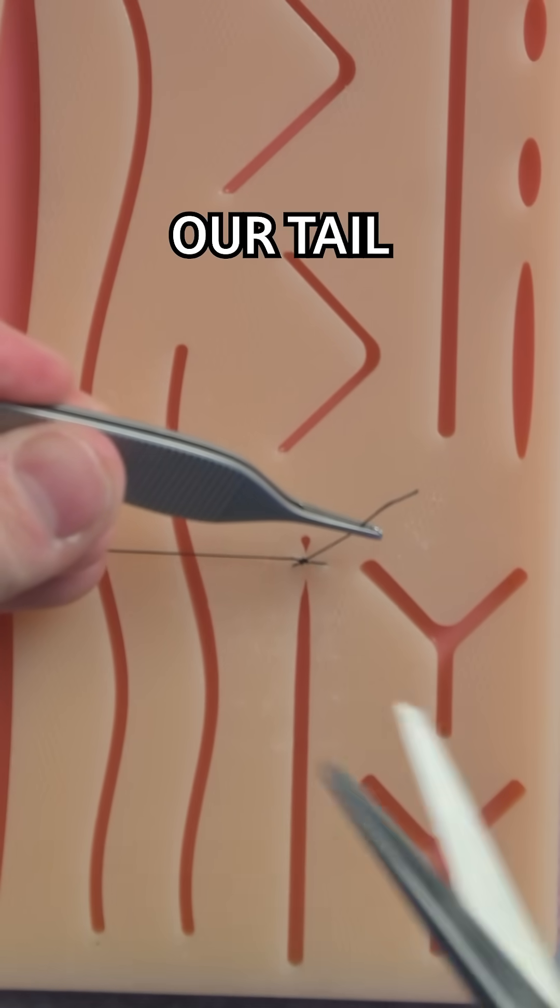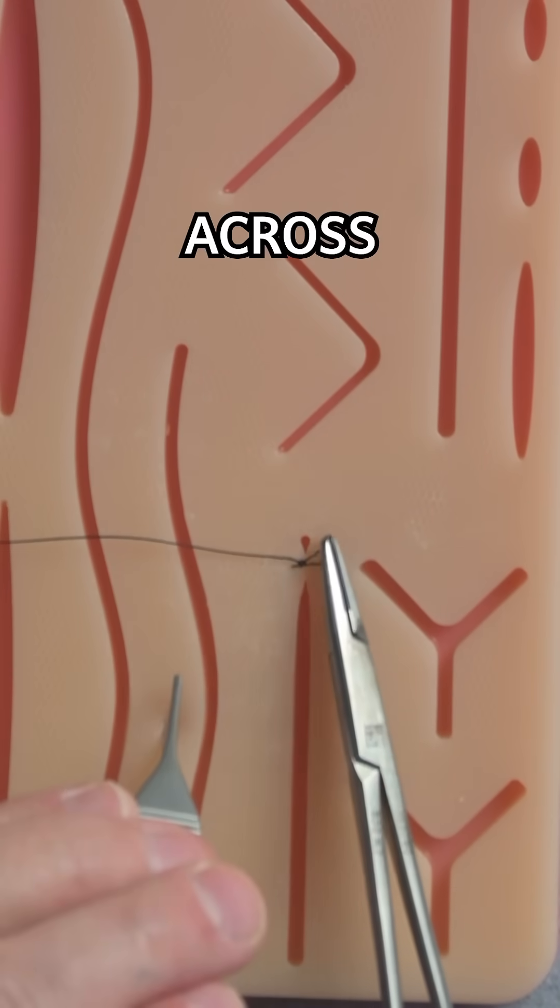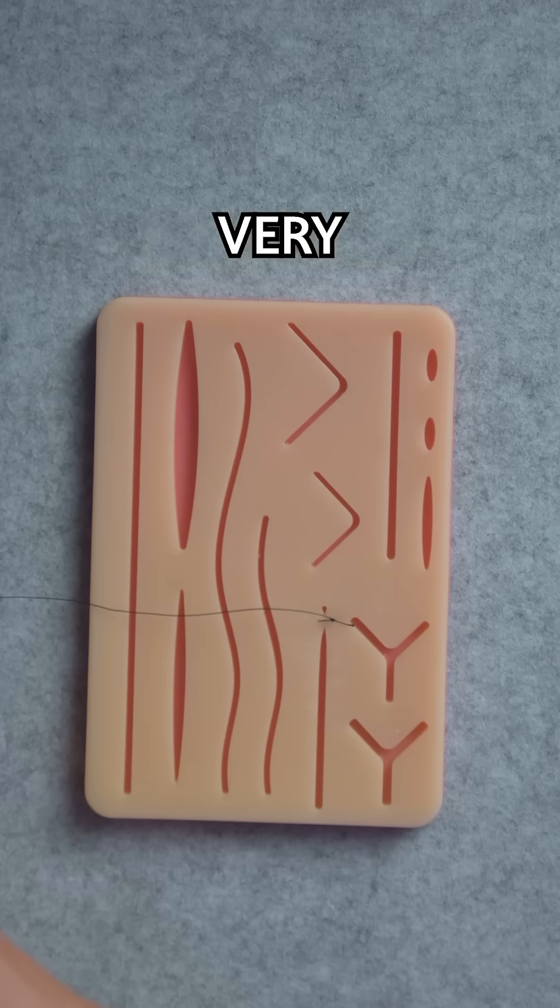Couple of things at the beginning. We need to cut our tail and pull our stitch across to the right side at the very beginning.